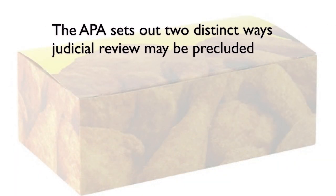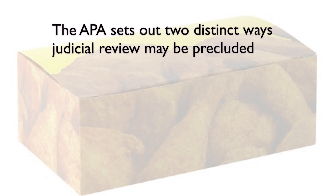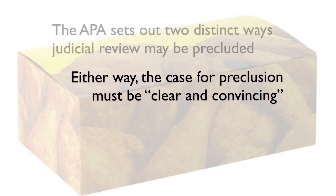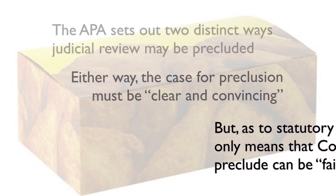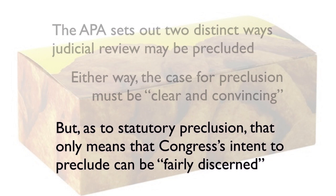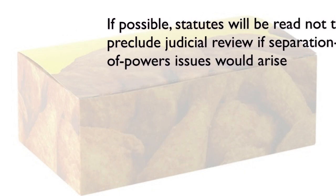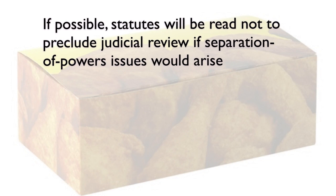The APA sets out two distinct ways judicial review may be precluded. Either way, the case for preclusion must be clear and convincing. But as to statutory preclusion, that only means that Congress's intent to preclude can be fairly discerned. If possible, statutes will be read not to preclude judicial review if separation of powers issues would arise.